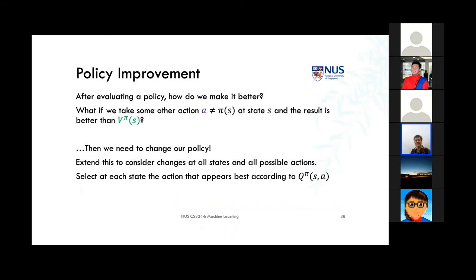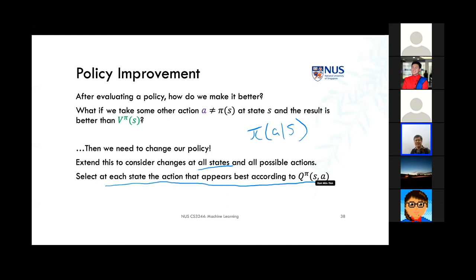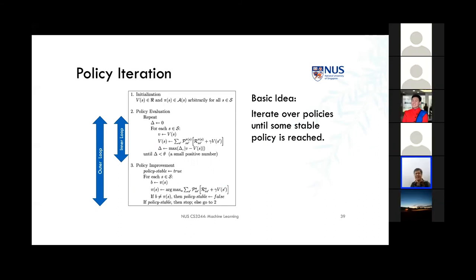Policy improvement: after evaluating a policy, we ask for every state whether changing the action could do better. We simultaneously consider all states and all actions, selecting the action with the best Q value under the current policy. This is policy iteration: an inner loop of policy evaluation runs to convergence, then an outer loop checks whether any action at any state could improve things via argmax.